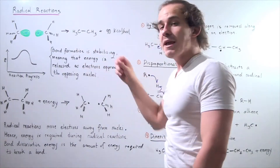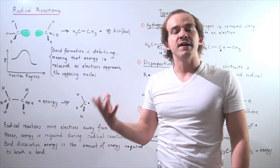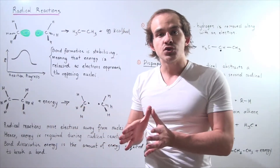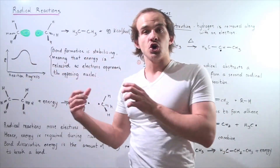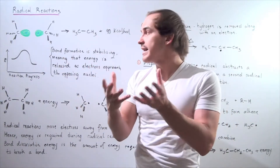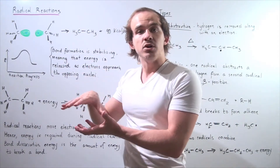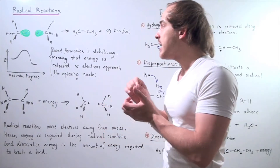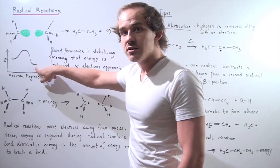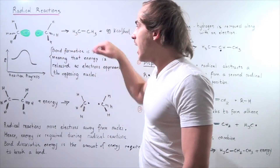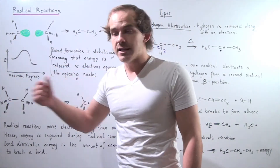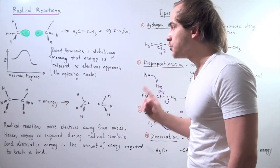Remember, bond formation is a stabilizing effect. Energy is released because electrons approach or reach the nucleus — they're closer to the nucleus, which means they're more stable and lower in energy. So whenever we go from radicals to non-radicals and form this bond, our energy drops because energy is released, giving us an exothermic reaction.